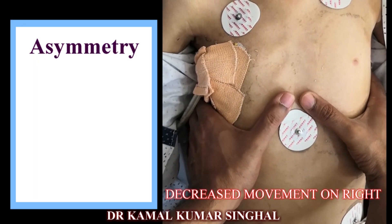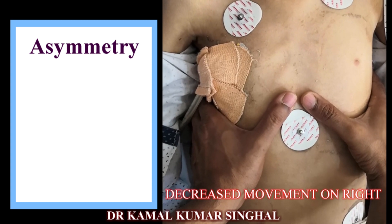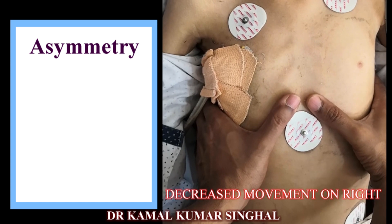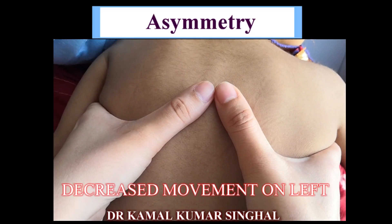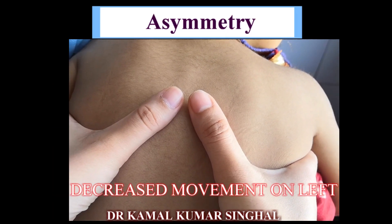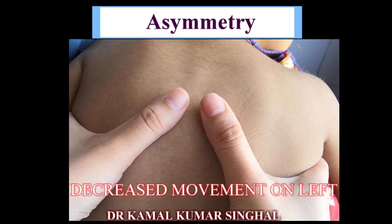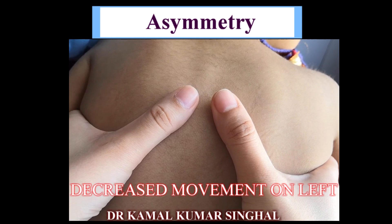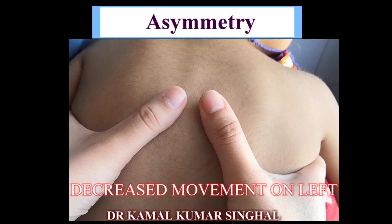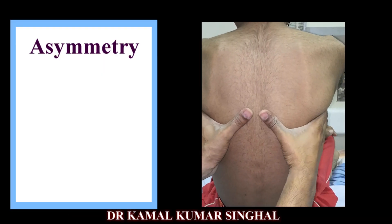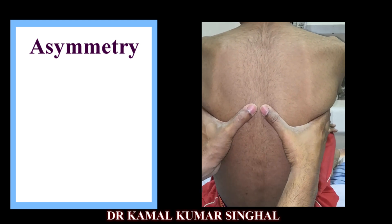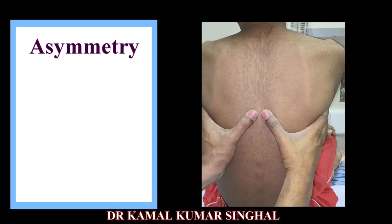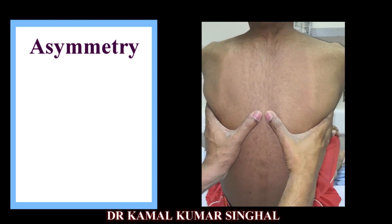Evaluate the symmetry of chest expansion by placing the palms on either side of the thorax at the level of the nipples and gently touching the thumbs in the midline. The thumbs will separate during inspiration and approximate during expiration, allowing comparison of chest excursion on both sides. A measuring tape can objectively measure the difference. Normal chest expansion is 3 to 5 centimeters in older children and less in younger children and infants.